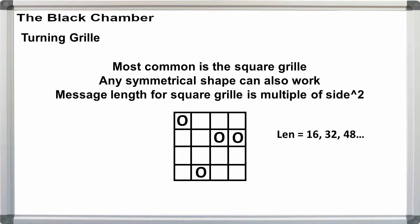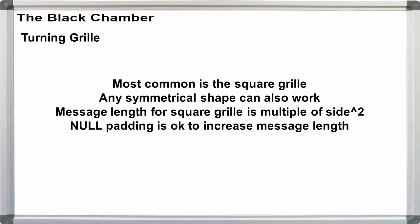If we use a square grill, then our message is expected to have a length based on the number of cells in the grid. That is, if the grill is 4x4, the message should be a multiple of 16. Padding with nulls is OK.